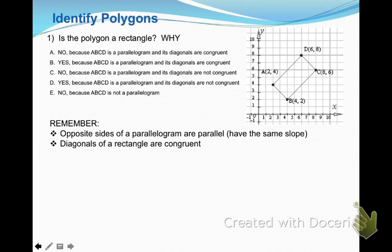I can look at it and say yeah, that really looks like a rectangle, but let's look at the answer choices. Yes or no, this is a parallelogram, and yes or no, the diagonals of this parallelogram are congruent or not congruent. So what they're asking us to do is first prove that this is a parallelogram or not, and then secondly, identify the shape as a rectangle by its diagonals. Remember that diagonals of a rectangle are congruent.